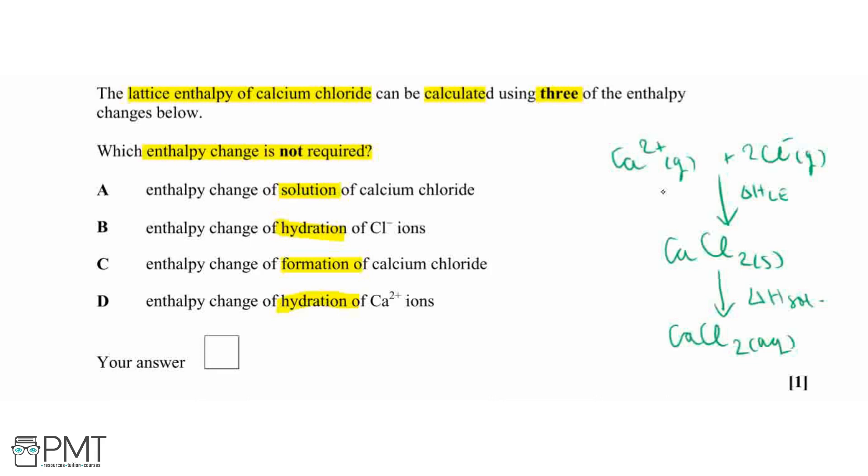So then just to finish off this cycle, all we actually need is just going to be the hydration values of the ions. So that's where we go from the gaseous ions to the aqueous solution, so we're hydrating the ions with the water. So this is our hydration enthalpy.